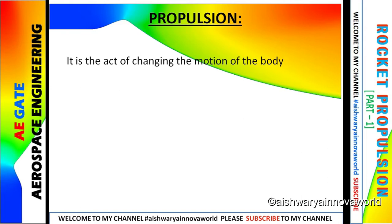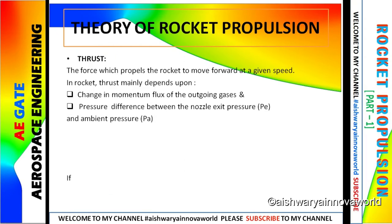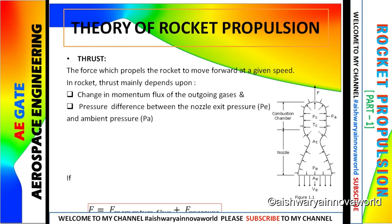Propulsion is the act of changing the motion of the body. Now I will come to the theory of rocket propulsion. So thrust can be classified into two forms: momentum flux and the pressure difference. The ambient pressure is also known as a back pressure.